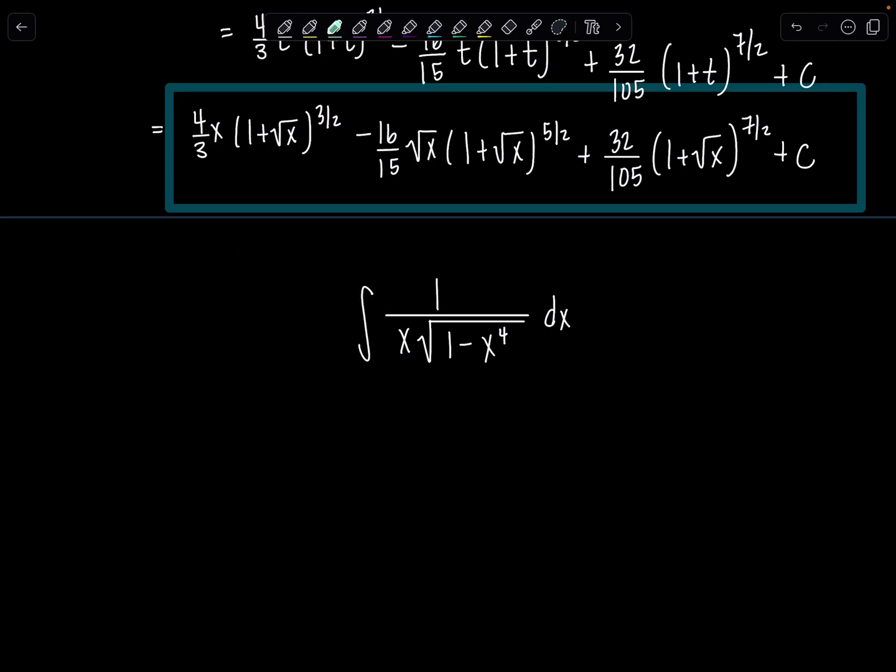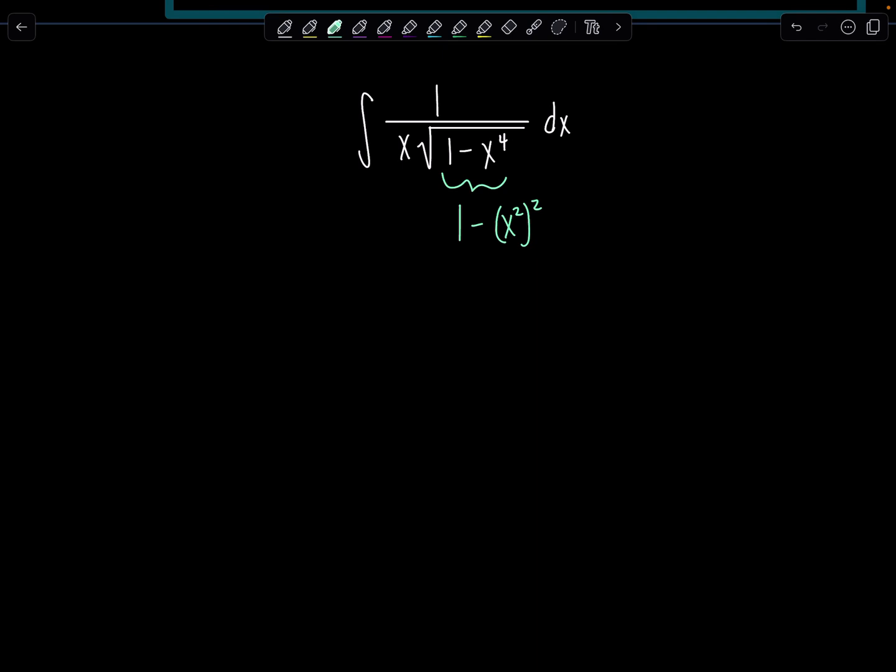Well, you can still think of this 1 minus x to the 4th as 1 minus x squared squared. And so I know in that scenario we would usually let the variable quantity equal a sine theta, a in this case being 1. Okay, then you differentiate both sides.